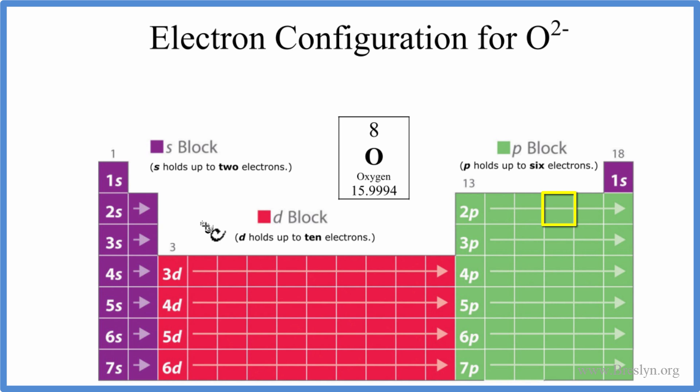To write the electron configuration for oxygen, we'll use this table here broken up into these orbitals. You can also use this chart here, there's a link in the description on how to use that, but I like this, I think this is a better way to do it.